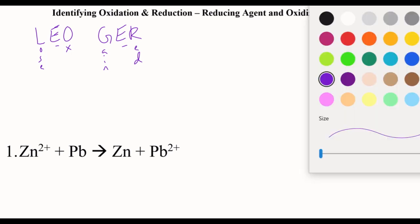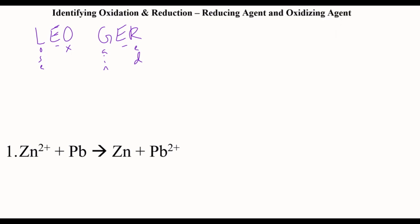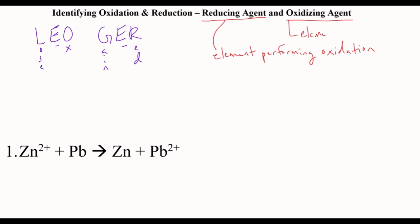New today should be the reducing agent and oxidizing agent, which is kind of confusing because it's just the opposite. The reducing agent is the element that performs oxidation, and the oxidizing agent is the element that performs reduction. They're like double agents — opposites. So oxidation is paired with the reducing agent, and reduction is paired with the oxidizing agent.